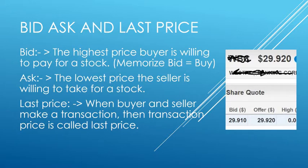Look at the screenshot. The bold 29.920 is the last price. The bid — the buyer is willing to pay 29.91, while the offer, which is equal to the ask, is 29.92. So that means the seller is asking 29.92 and the buyer is willing to pay only 29.91.